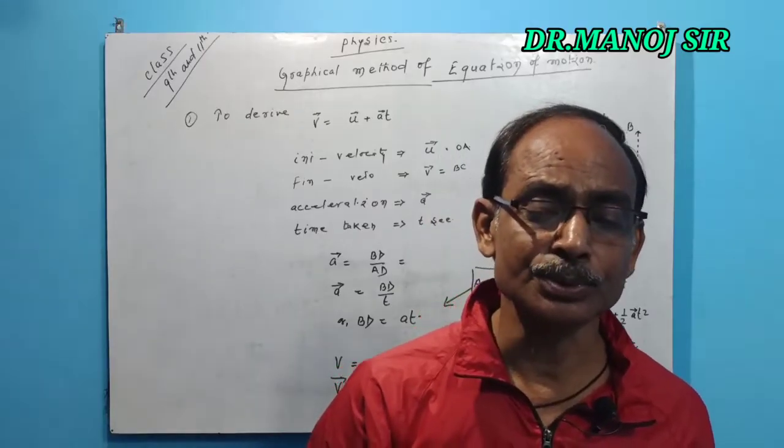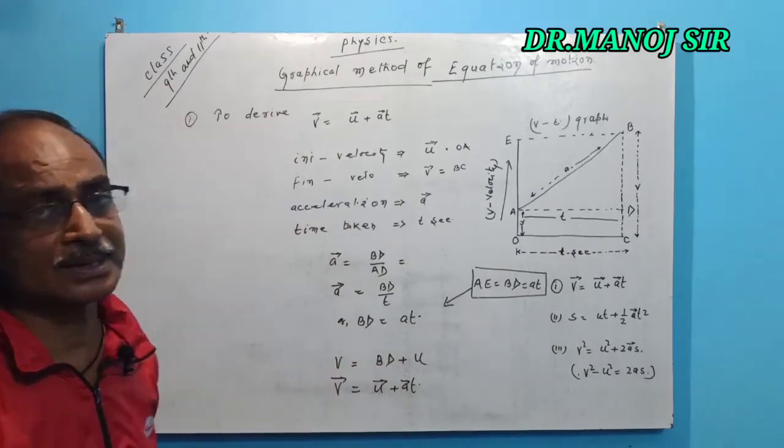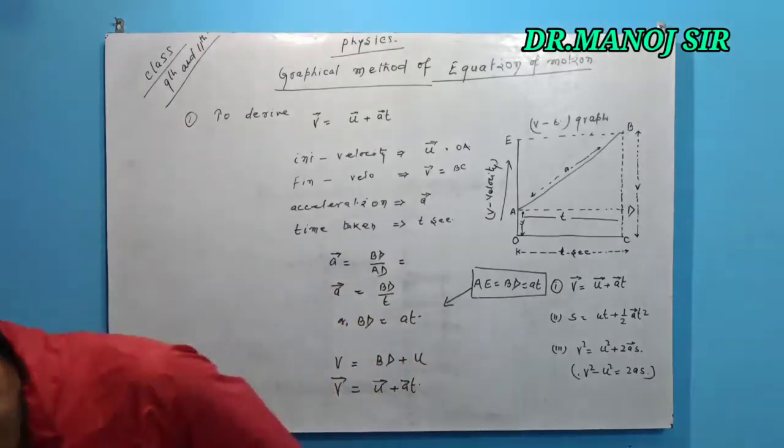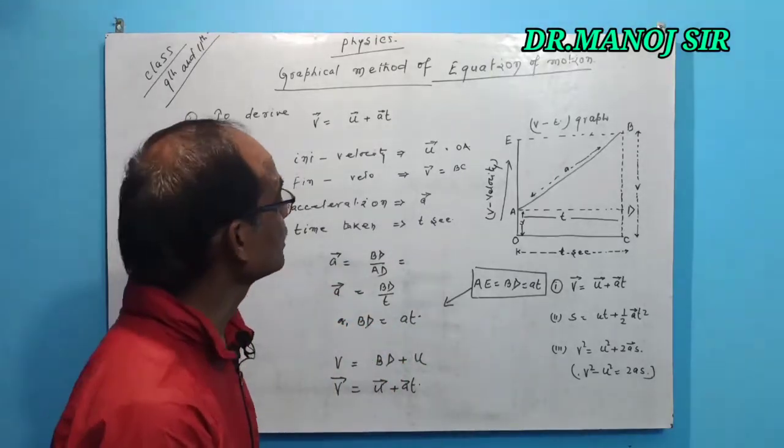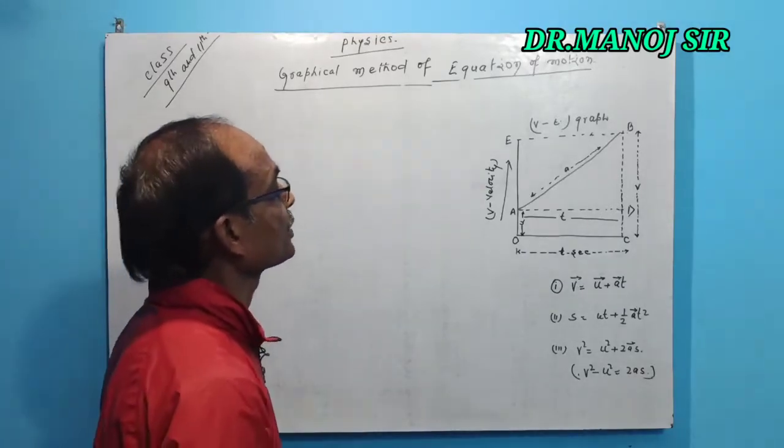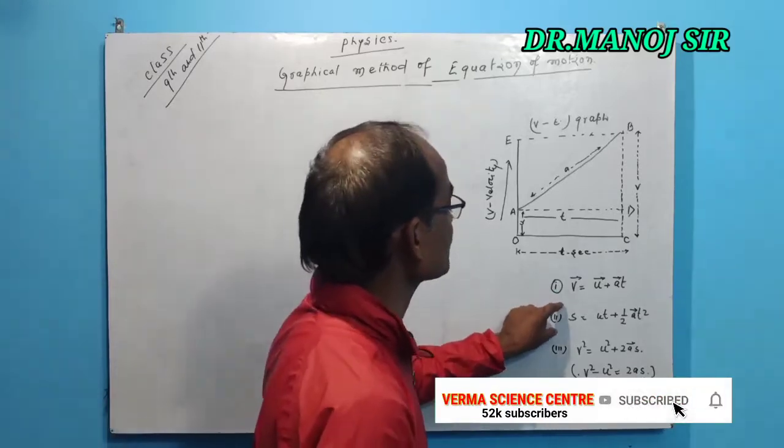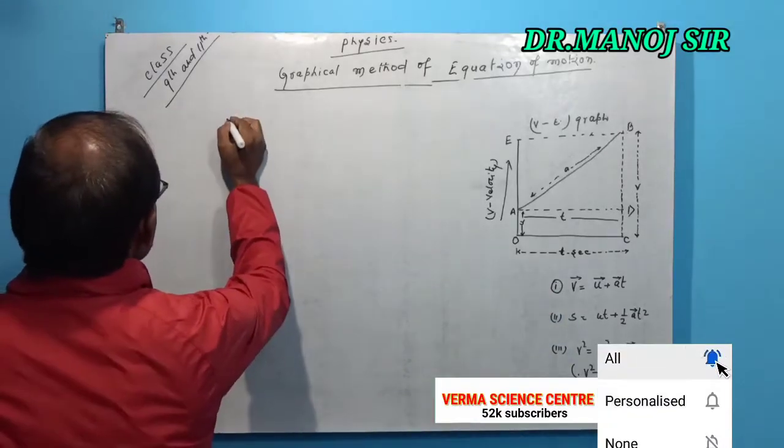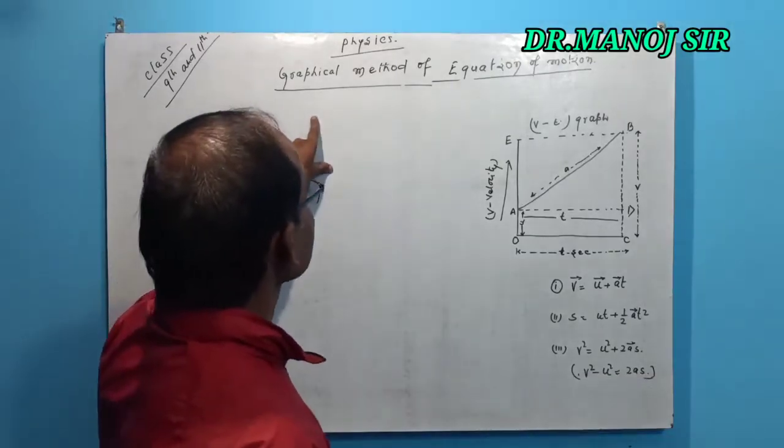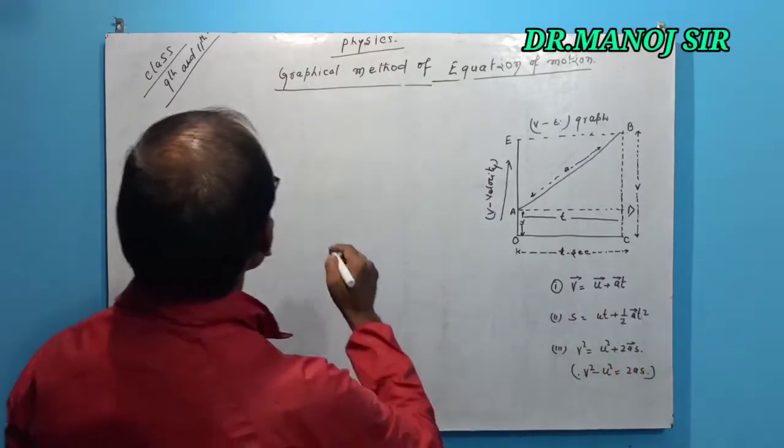Now, to derive s equals u t plus half a t squared, it is the distance formula of motion. Second derivation of equation of motion that is known as distance formula, to derive s equals u t plus half a t squared.